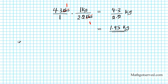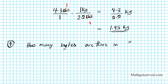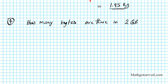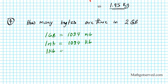Let's take a look at the last question, question number 4. How many bytes are there in 2 gigabytes? We're going to solve this using the facts that 1 gigabyte equals 1,024 megabytes, 1 megabyte equals 1,024 kilobytes, and 1 kilobyte equals 1,024 bytes. What conversion factors can I generate using these three statements?